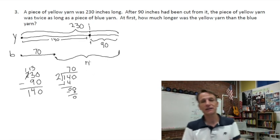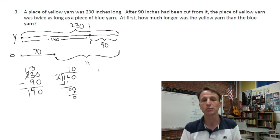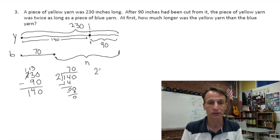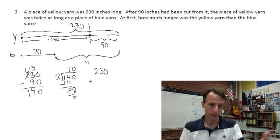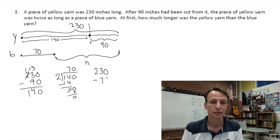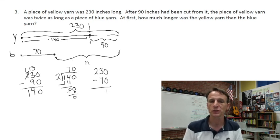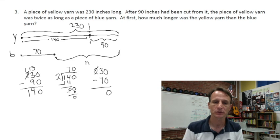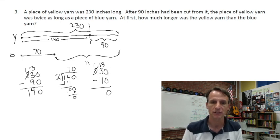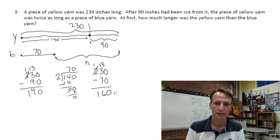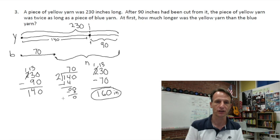But remember, our question is, at first, before it was cut, how much longer is the yellow yarn than the blue yarn? Well, at first, the yellow yarn was 230 inches before it was cut, and the blue yarn, now we've discovered, is 70. So what's the difference between them? That's this n here we're trying to solve for with this bracket. So again, we just subtract to find the difference. 0 minus 0 is 0. And we could just do 23 minus 7 again, but we'll do it the long way. We'll leave one of those hundreds, take one over as 10 tens with the 3 tens already present. 13 tens minus 7 tens is 6 tens. 1 minus nothing is still 1. So n, the difference between them, is 160 inches. I'm going to circle that so we remember this is our final answer.